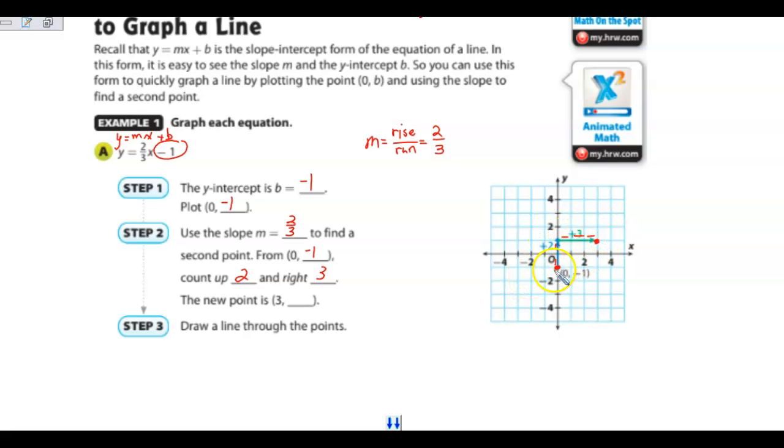Once we have those 2 points, we've got this point and this point, now we can draw our line through those 2 points. There's your line going through those 2 points. So see how we took what we knew, found our y-intercept, plotted it first, and then we used our slope, did our rise over our run, found a second point, and then drew the line.